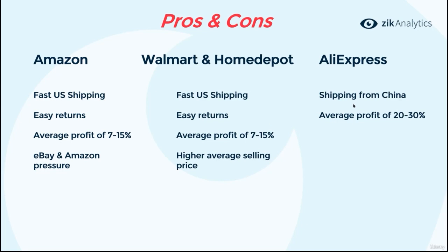Now, AliExpress is different — it ships from China, so shipping takes longer. This is the main disadvantage of working with AliExpress. However, the average profit on products you sell from AliExpress is 20% to 30%. There are also a lot of dropshippers using AliExpress, which makes it very easy to find products — same with Amazon, by the way.